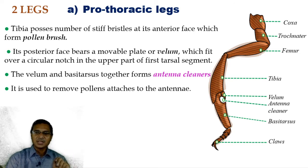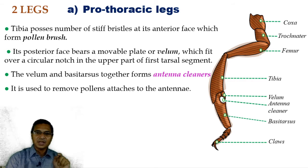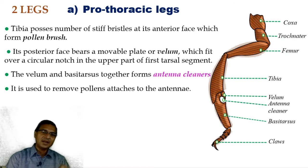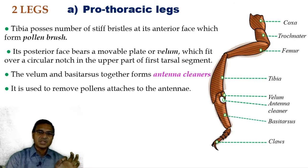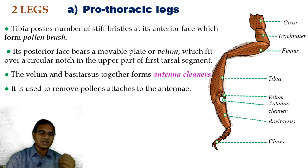The tibia terminally articulates to the tarsal segment — four or five tarsal segments are present. The basal tarsal segment is the metatarsus or basitarsus. The velum along with the basitarsus forms the antenna cleaner. Through this antenna cleaner, the antennae are inserted and pollen stuck to the antennae is collected or removed. This is the speciality of the prothoracic leg.